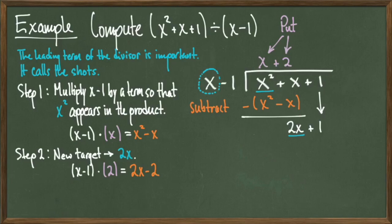And then we will subtract the product, 2x minus 2, from the polynomial above like we did before. After the subtraction, we get an answer of 3. Since there are no more terms underneath the division bar to drop down, this means that we're done.